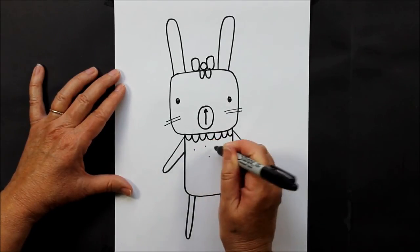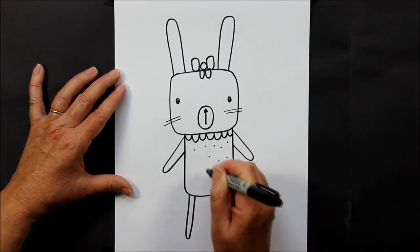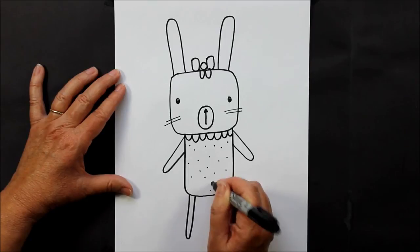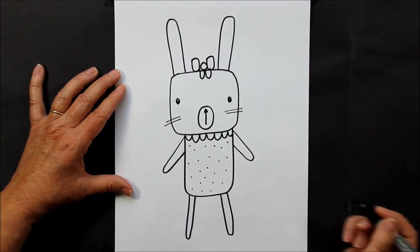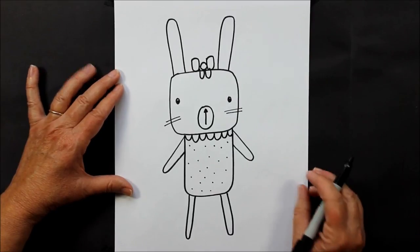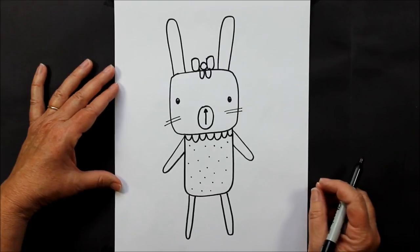But you can put swirls or hearts, stripes or bows or butterflies, whatever you'd like to make her look super fancy. Or maybe she's going to go to a party. There's your bunny! I hope you like her. Thanks for watching, bye!